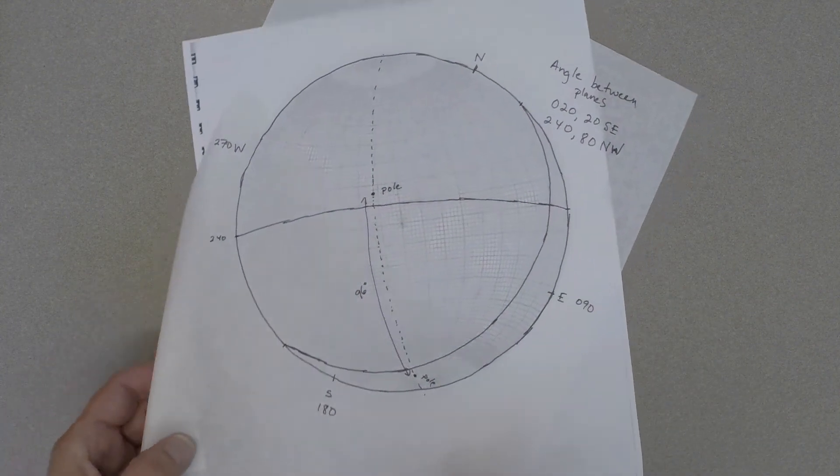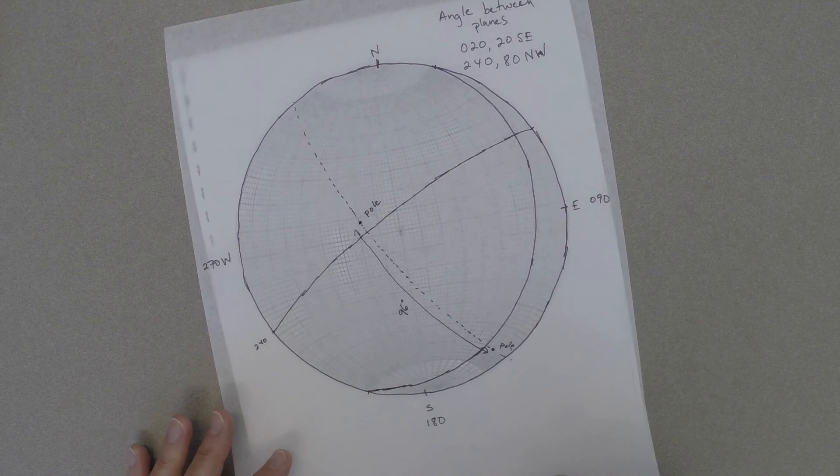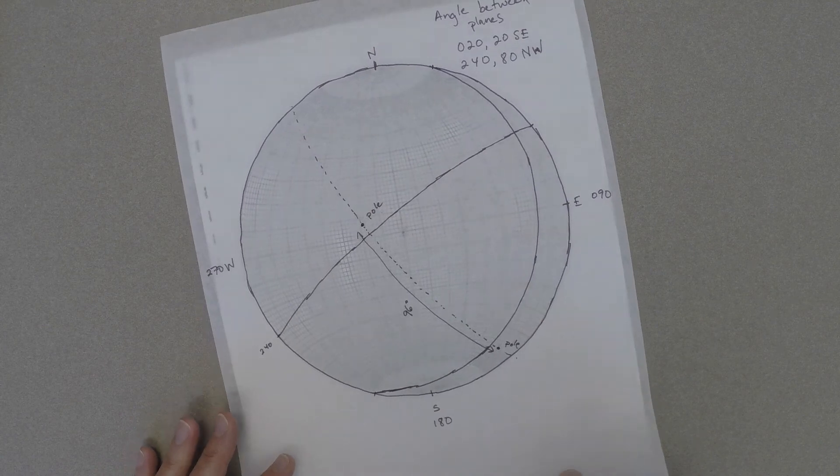And the angle between the poles of the planes is the same as the angle between the planes. One thing to keep in mind is that there's always two possible angles between intersecting planes, one obtuse angle and one acute angle. We've just measured the obtuse angle. If you want to find the acute angle, you want to subtract the obtuse angle from 180 degrees.